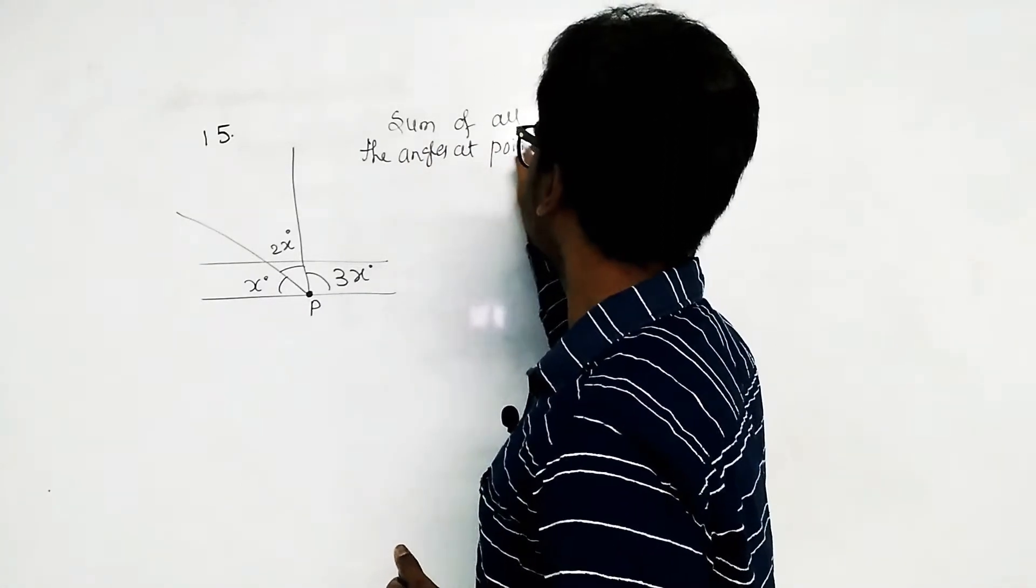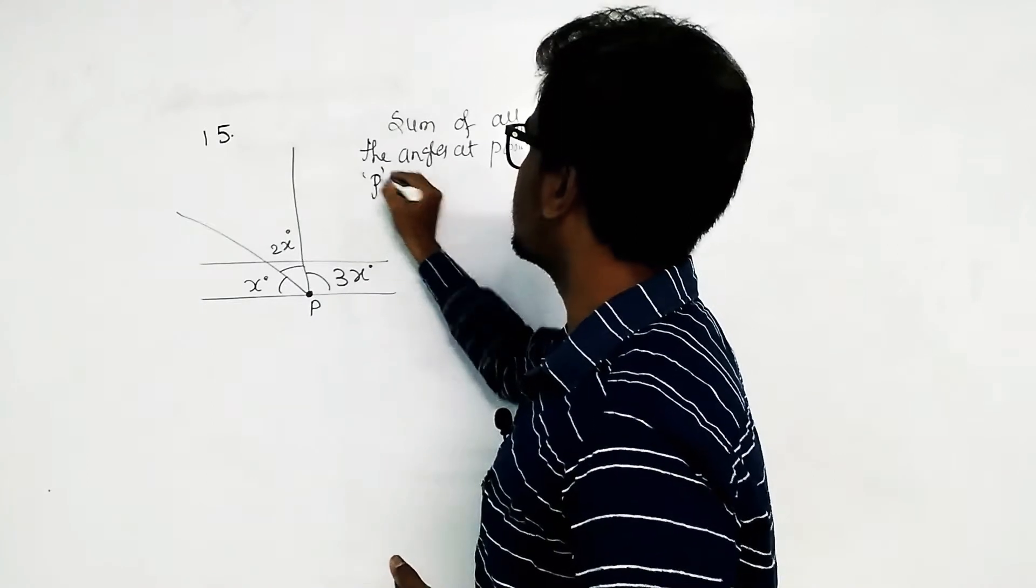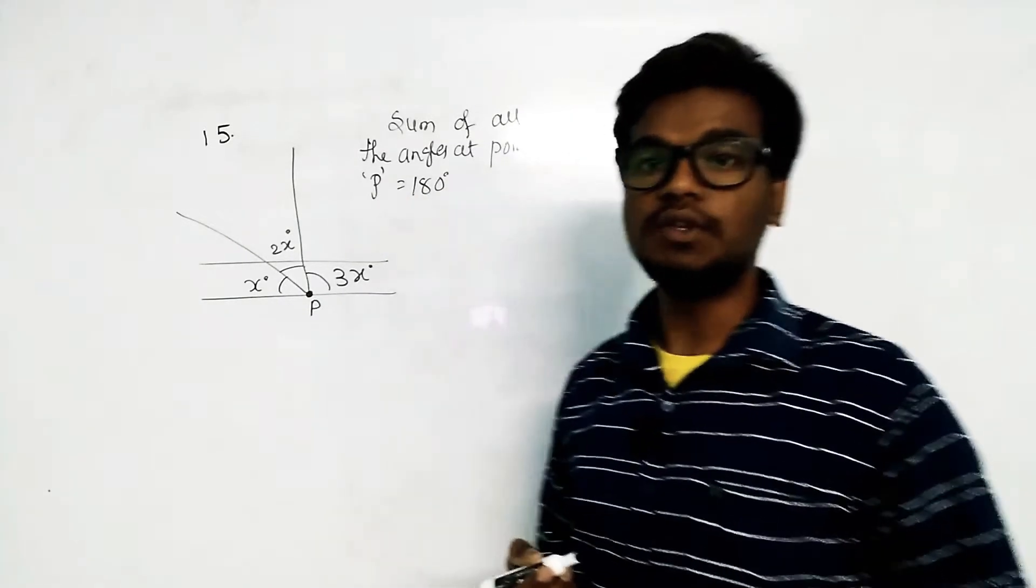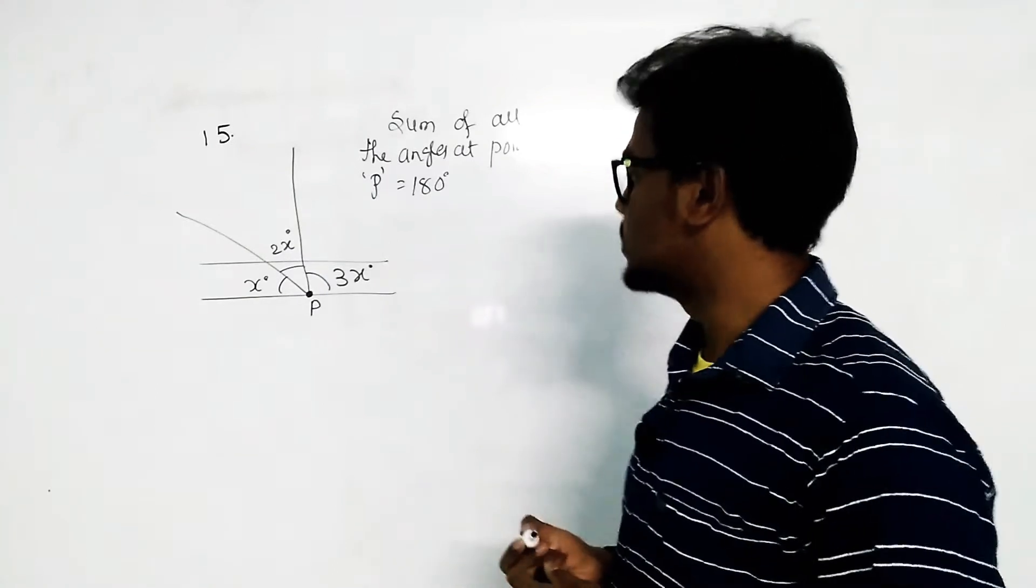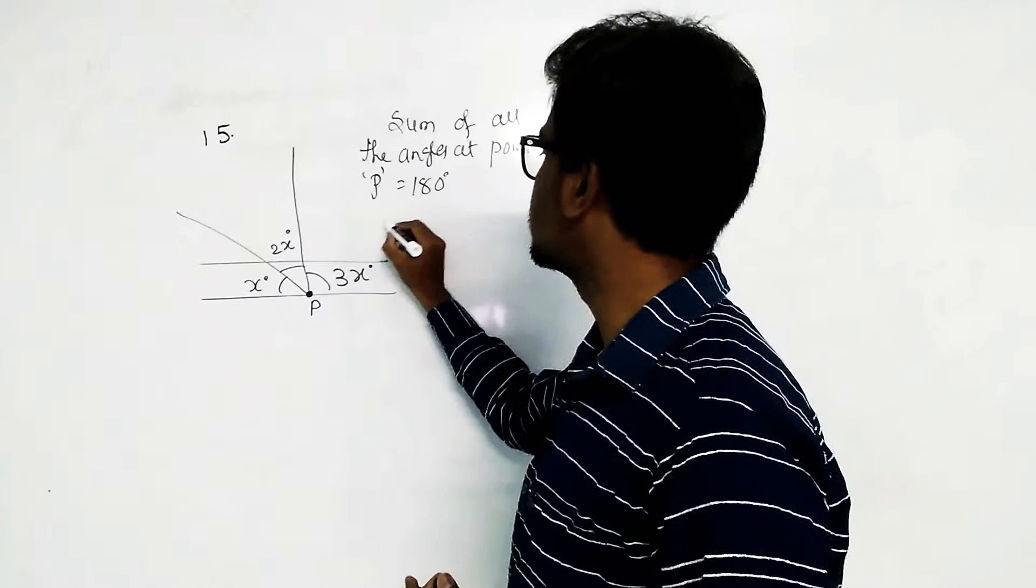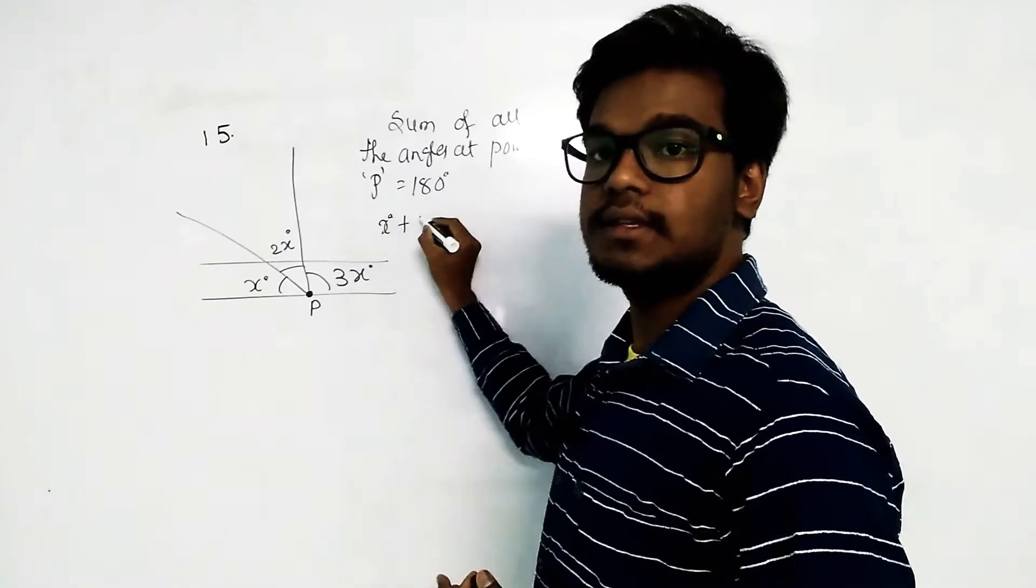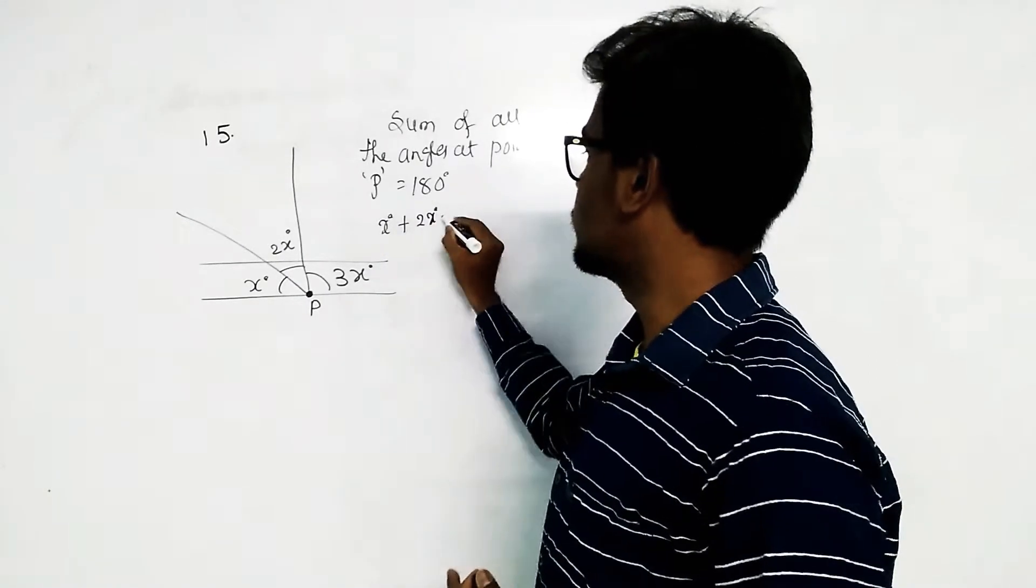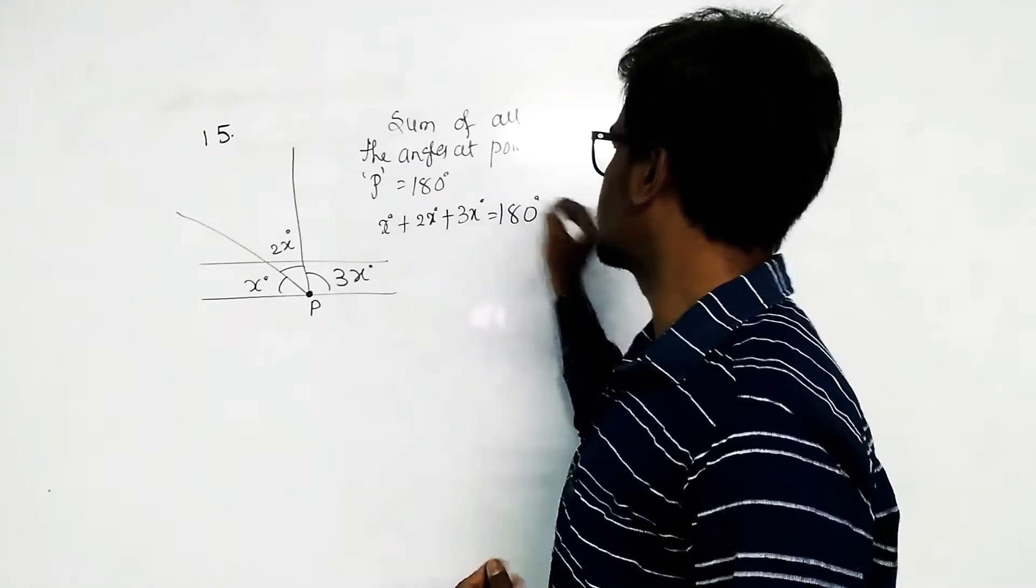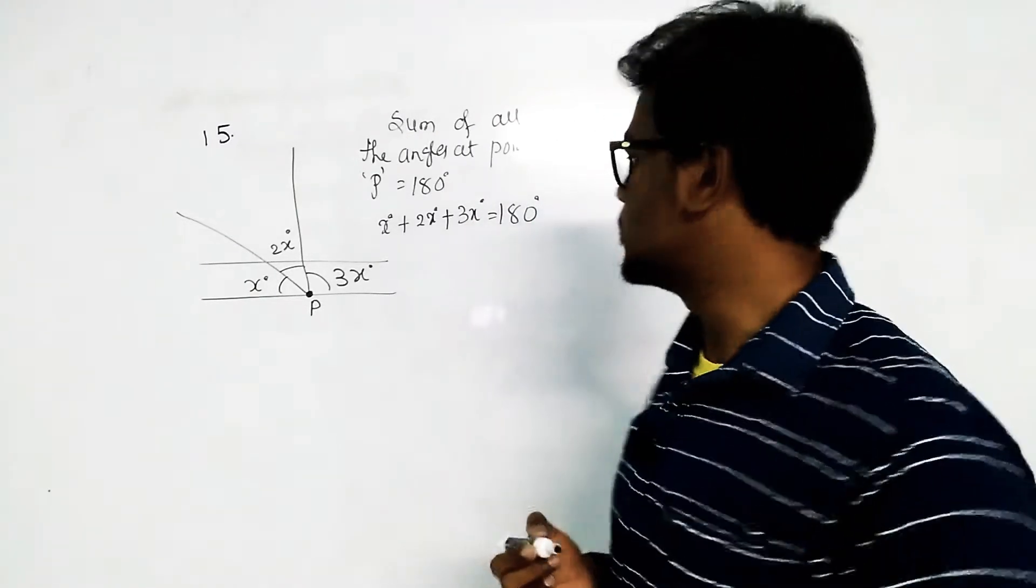So that means sum of all the angles at point P is equal to 180 degrees. At all the angles at point P: x degrees plus 2x degrees plus 3x degrees equal to 180 degrees.